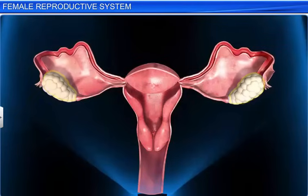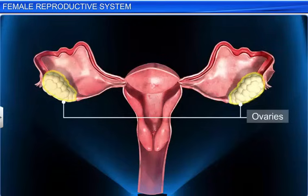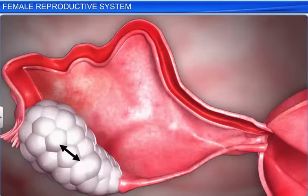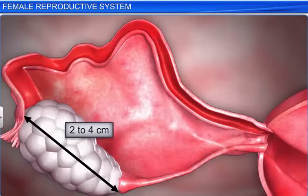The female reproductive system includes a pair of ovaries, located one on each side of the lower abdomen. They are the primary sex organs, as they produce the ovum, or the female gamete. Each ovary is about 2 to 4 centimeters in length. They are connected to the pelvic wall and the uterus by ligaments called mesovarium.